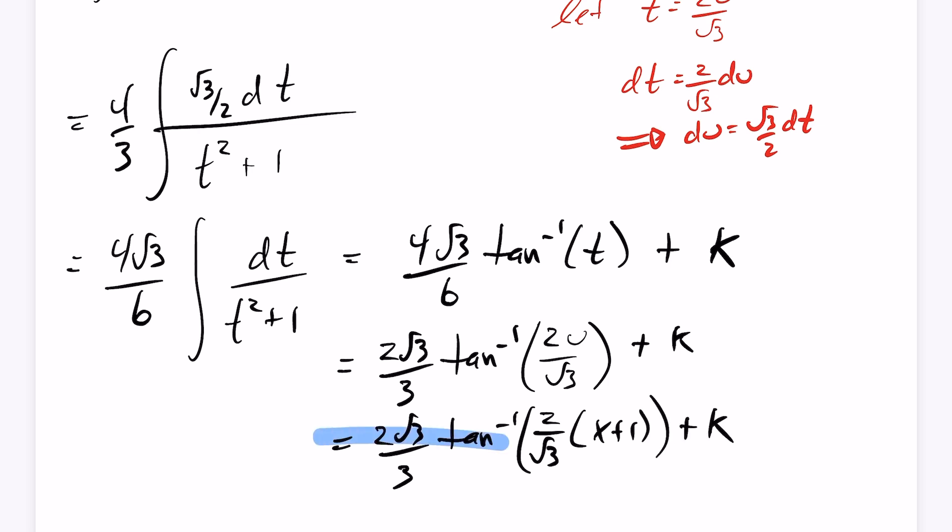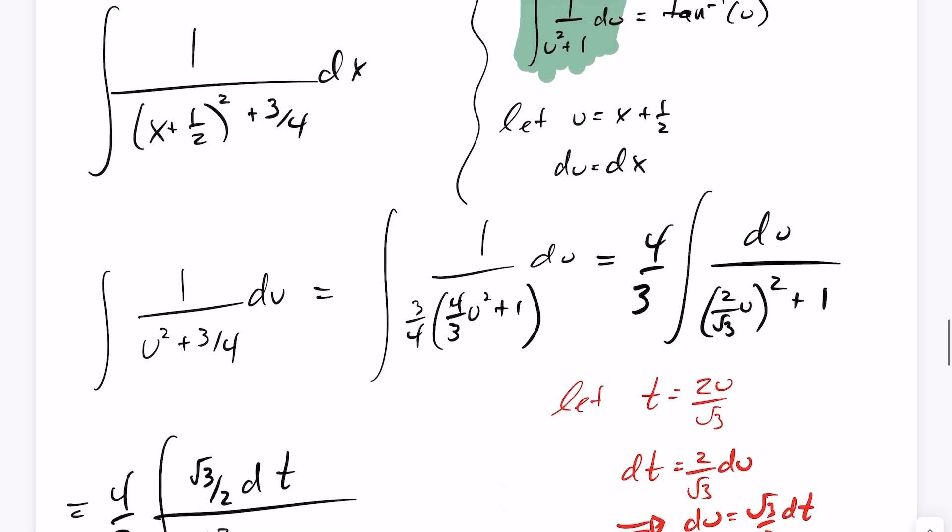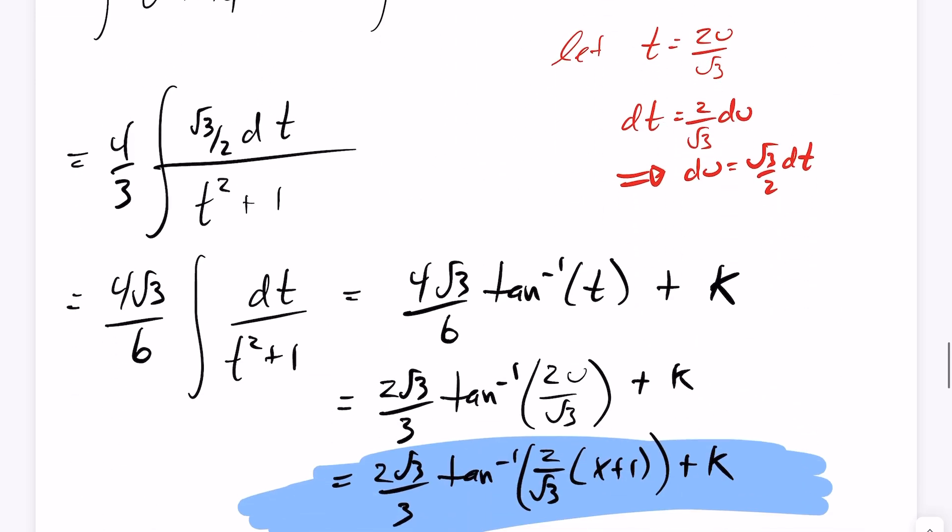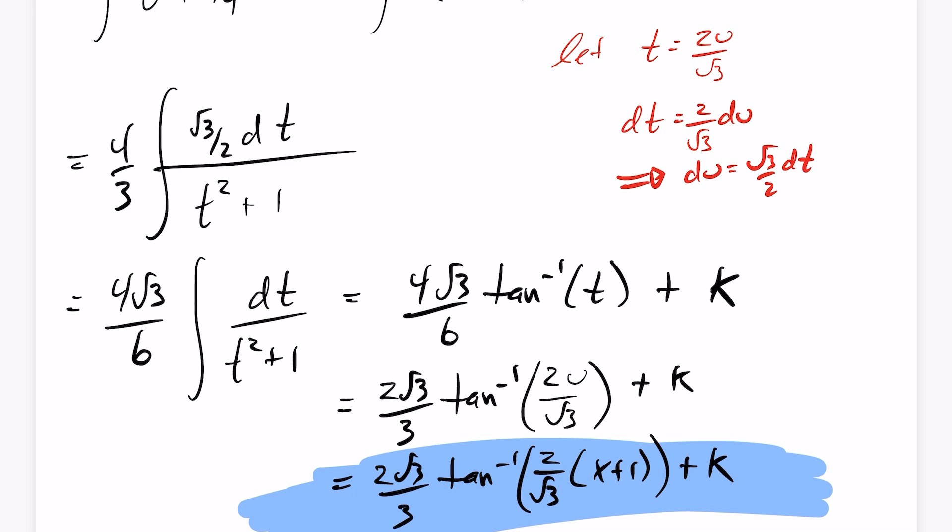And now I have my integral of 1 over x squared plus x plus 1, which is in fact equal to 2 root 3 over 3, tan inverse of 2 over root 3 times x plus 1 half, plus some constant k. Thank you.